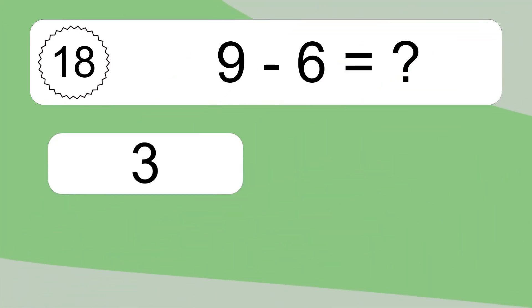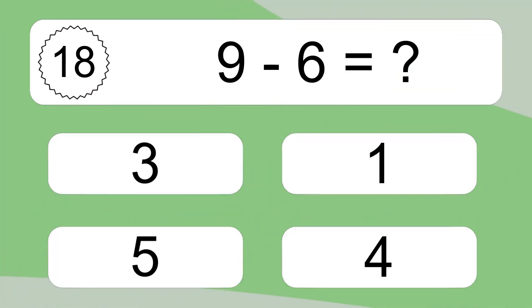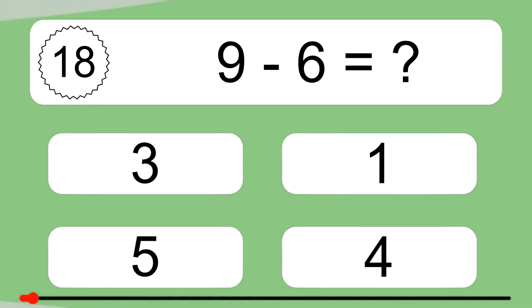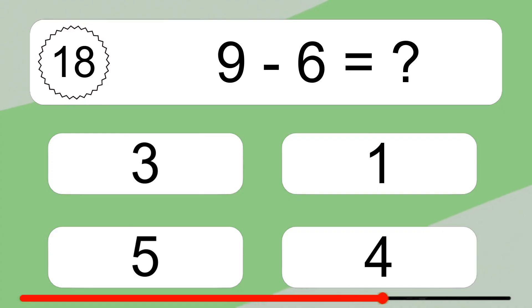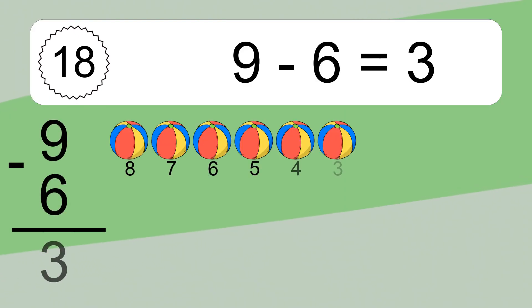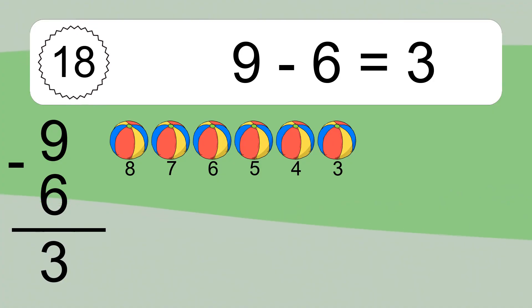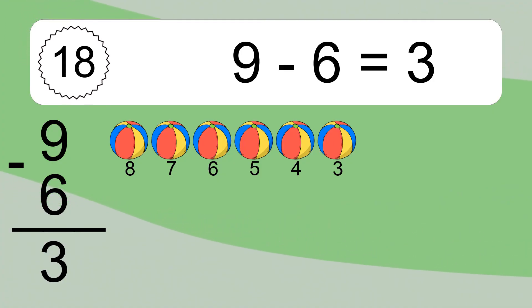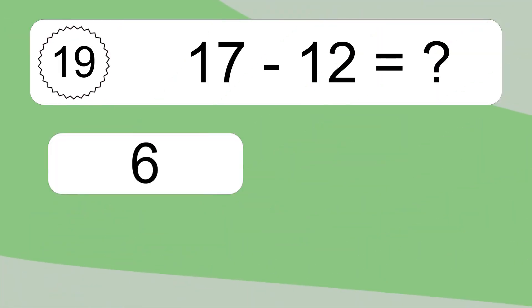9 minus 6 equals what? 9 minus 6 equals 3. Let's count it. 8, 7, 6, 5, 4, 3.